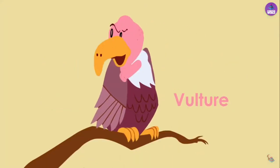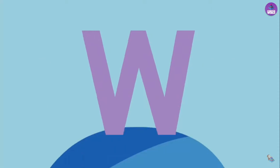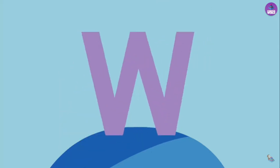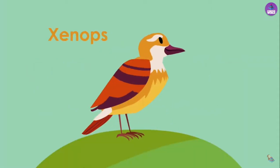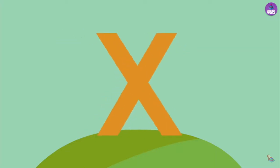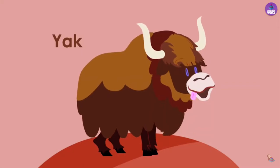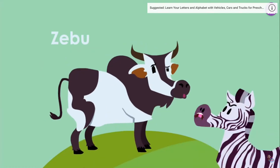V is for Vulture. V. W is for Wolf. W. X is for Xenops. X. Y is for Yak. Y. Z is for Zebu. Hey, what about me?